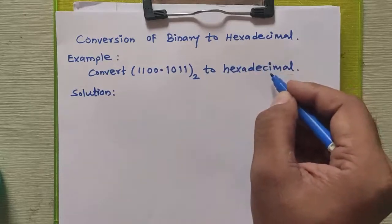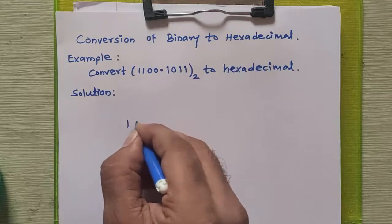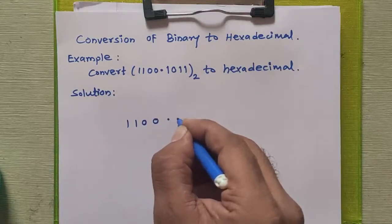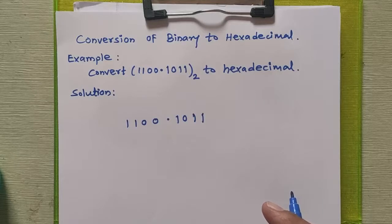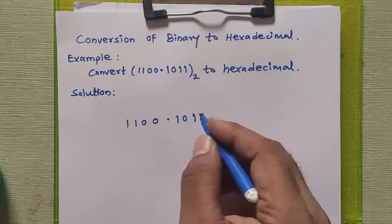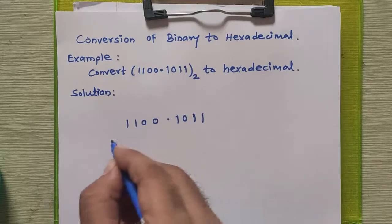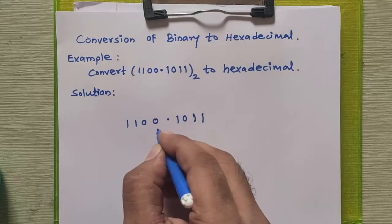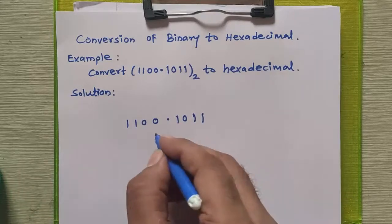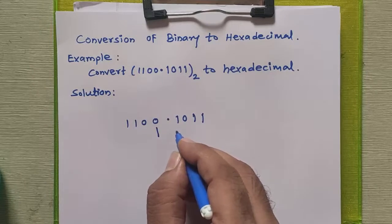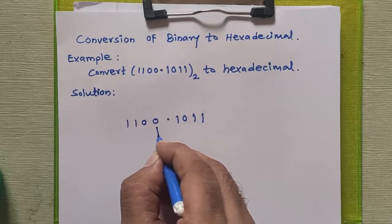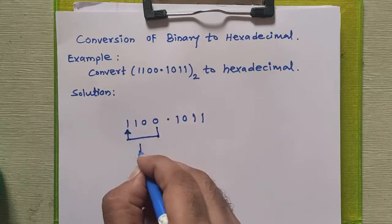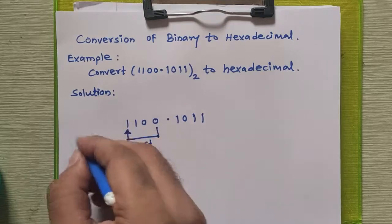First of all, we will copy the given number as it is into the solution. We need to form a group of 4 binary bits and write the hexadecimal equivalent for each group to obtain our hexadecimal number. For the integral part, we form groups from right to left. So 1100 is our first group, and there are no further bits remaining — only one group for the integral part.